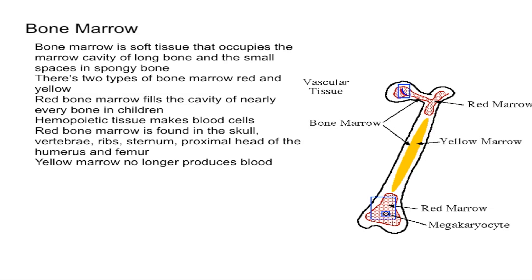Eventually, as you age, most of the red marrow turns into fatty yellow marrow, and this yellow marrow no longer produces blood cells like red marrow did. However, one interesting thing is that when a person is really anemic, the yellow marrow can actually turn back into red marrow. Remember, anemia is essentially when you don't have enough healthy red blood cells to carry oxygen.